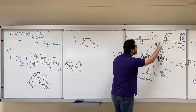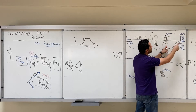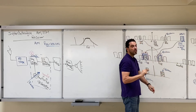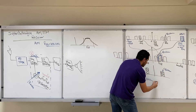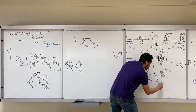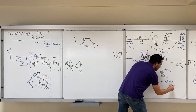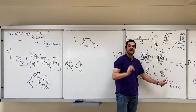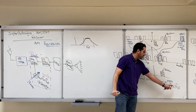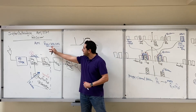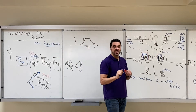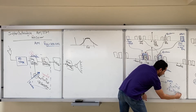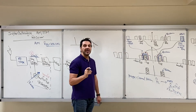Each channel has its image at a distance of two FIFs away. The image channel problem states that for a channel at FC, its image will appear at FC plus 2×FIF. In the case of AM, where FIF is 455 kHz, the image will appear at FC plus 910 kHz.